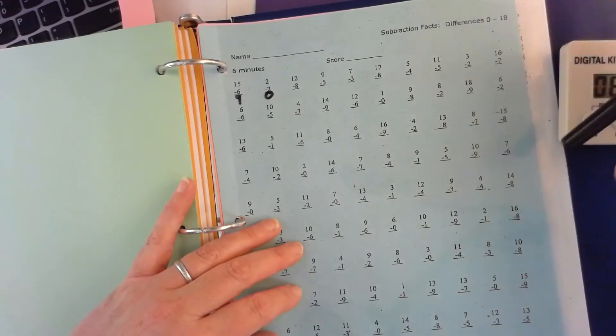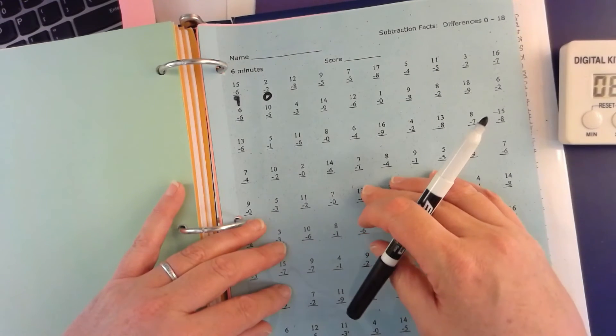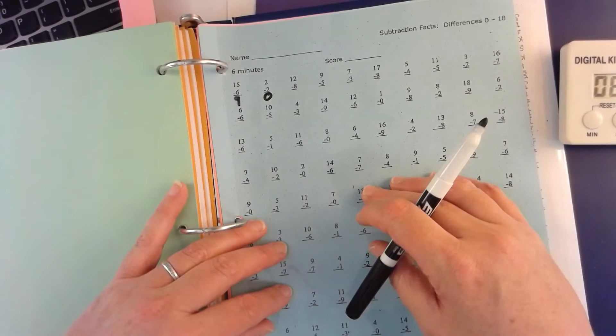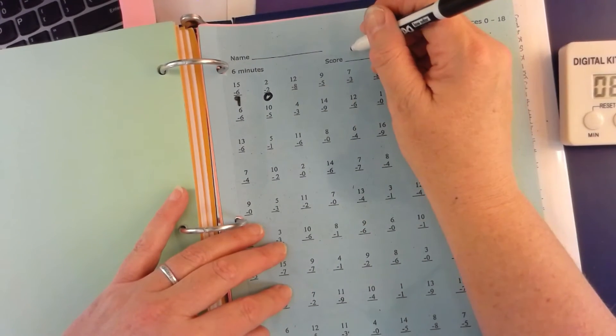You do as many as you can, then you can have your parents come back and check it and they can circle the correct ones.